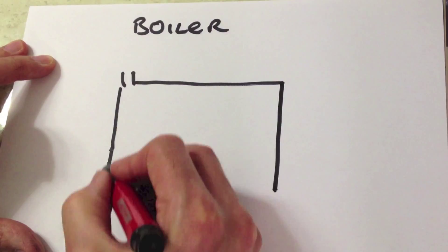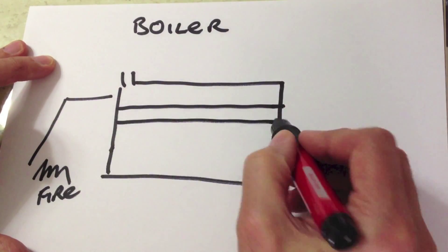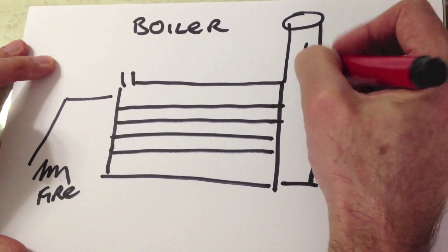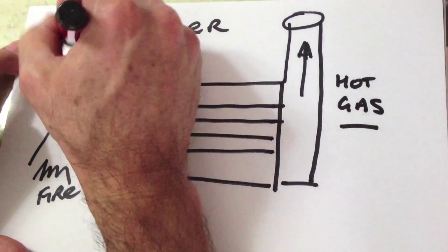The other thing that we need is a boiler. The boiler has a fire at one end. It passes the hot gas along it and makes the water inside the boiler boil. It looks a lot like this.